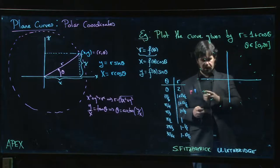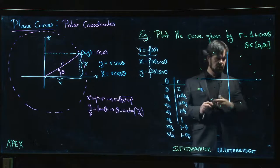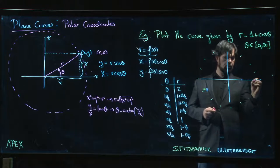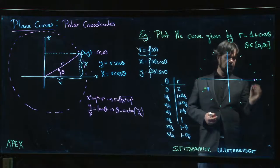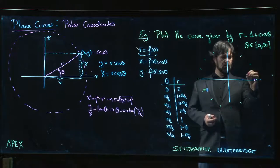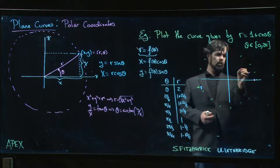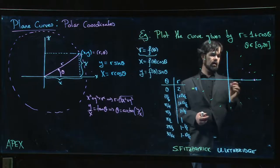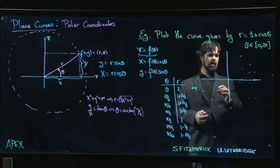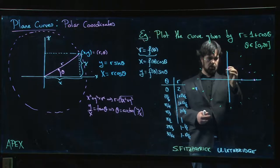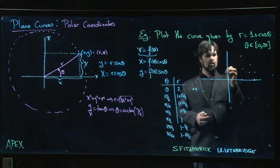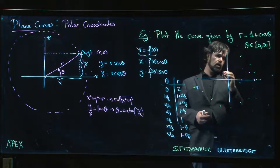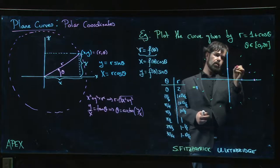We start out at one two and we plot a point. Then we go up to pi over six and we're a little bit further in, a little bit further in we're at like three over two. You try actually plotting these points. Once we get to pi over two we're at one, so we have one, about here, about there.